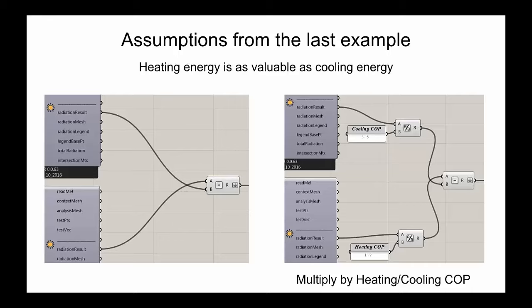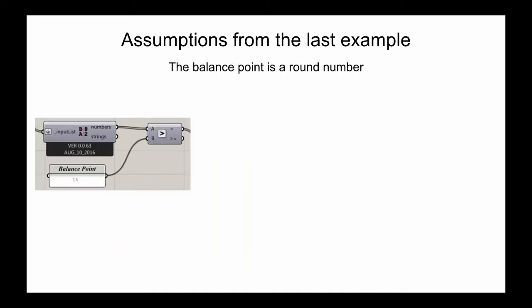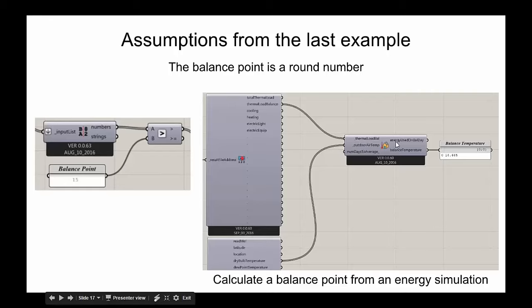You can start with raw assumptions and refine your studies as you better understand your HVAC systems. Finally, another assumption was that I used my intuition to set the balance point at 15°C. Intuition is okay for a rough start, but you can actually get a balance point from an energy simulation using the Honeybee Calculate Balance Temperature component. I ran a test box model for an office in Boston and got 16°C — a bit higher. These are not meant to be hard and fast rules; they're things you customize to answer your unique questions.